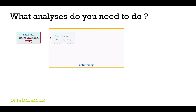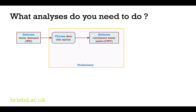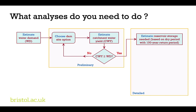Following that, you need to do a set of preliminary analyses. You need to choose a dam site option somewhere along the river between Abergwessin and just upstream of Llanwrtyd Wells. Then you need to estimate the catchment water yield by generating the synthetic hydrograph for your particular dam site. You do that by calculating the catchment area upstream of your dam site and applying the ratio of the Silmarie catchment area to your estimated catchment area, multiplying that by the flow record. You can then assess whether your catchment water yield is greater than or equal to the estimated water demand. If it's not, you need to go and choose a different dam site. If it is, you proceed to a more detailed analysis.